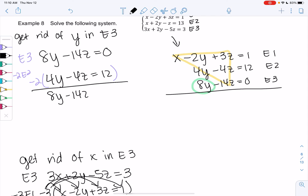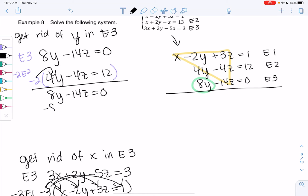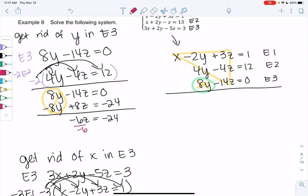So 8y minus 14z equals 0. And then we get negative 8y, which was the goal, we're looking for those opposites, plus 8z equals negative 24. And the whole point was for y to cancel out, so that's perfect. So negative 14 plus 8 gives me negative 6 for z equals negative 24. And then we can just immediately solve for z and get negative 24 divided by negative 6, so z is equal to 4.